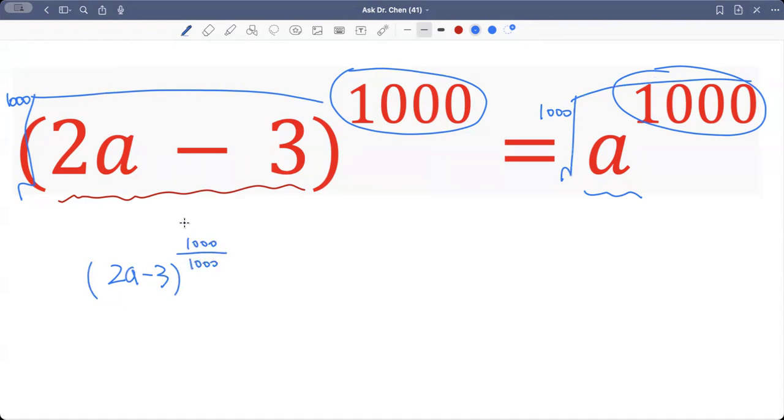The power is in the numerator of the rational exponent, and the index is in the denominator of the rational exponent. Same thing for the left-hand side.